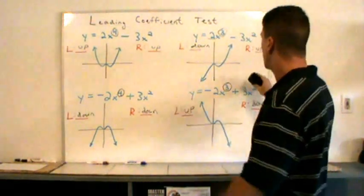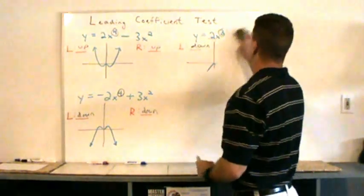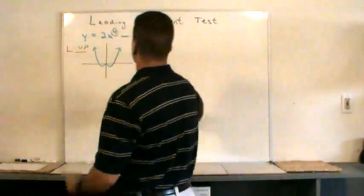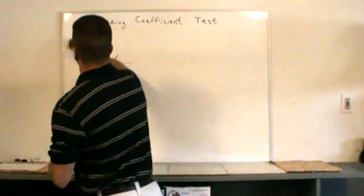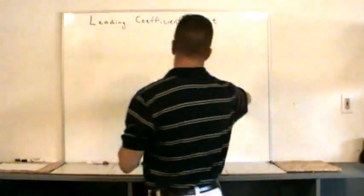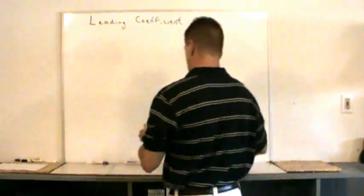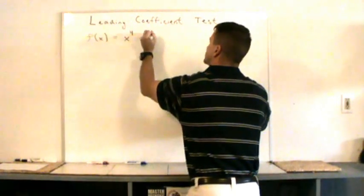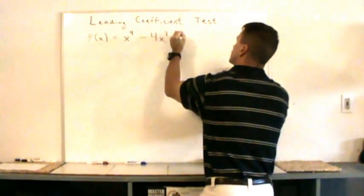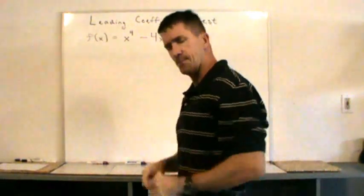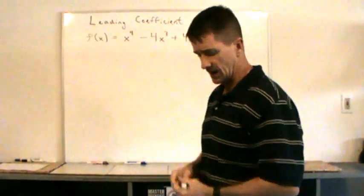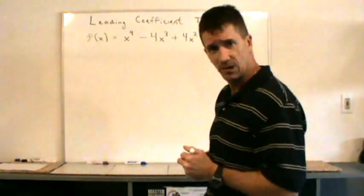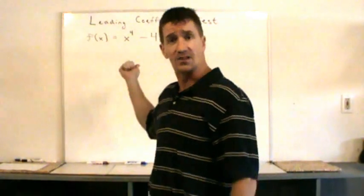So now we're going to do an example. I'm going to put a polynomial function up on the dry erase board, and from scratch we're going to go through a few steps and make a really decent sketch of this function. Here's my example: f(x) = x⁴ - 4x³ + 4x². The highest degree there is four. The first thing to consider is the leading coefficient test — what do we know about the end behavior of this polynomial function?